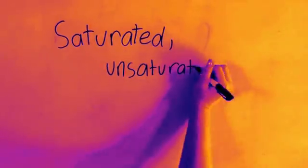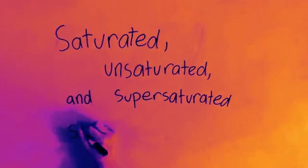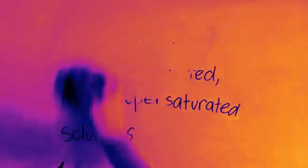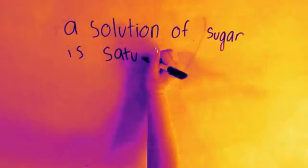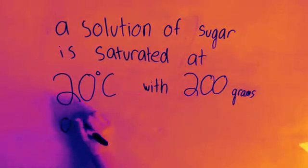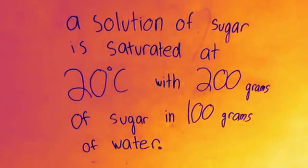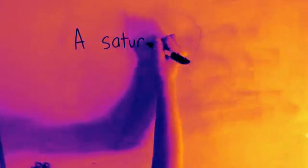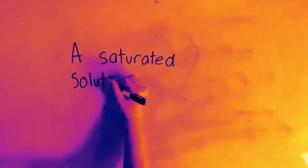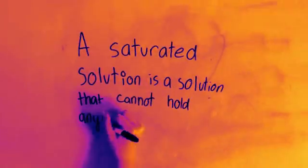I am going to show you the differences between saturated, unsaturated, and supersaturated solutions. A solution of sugar water is saturated at 20 degrees Celsius with 200 grams of sugar and 100 grams of water. A saturated solution is a solution that cannot hold any more solute. This is shown in the diagram.